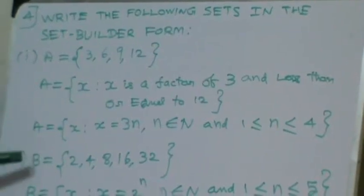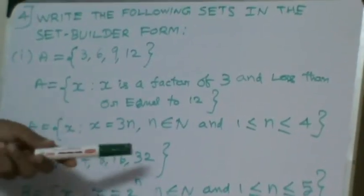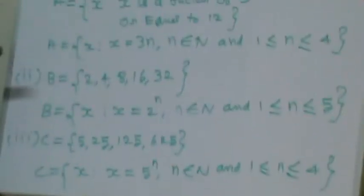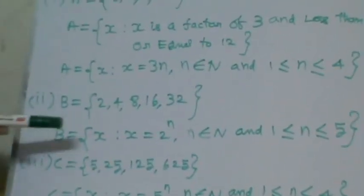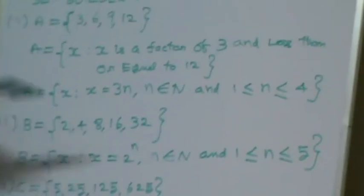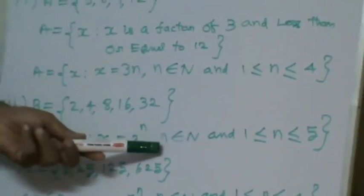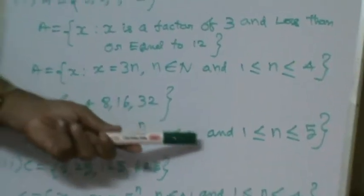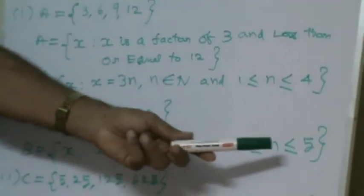Now, next sum B is equal to 2, 4, 8, 16, 32. This we can represent in this method. B is equal to set of all x such that x is equal to 2 power n where n belongs to N and 1 less than or equal to n less than or equal to 5.